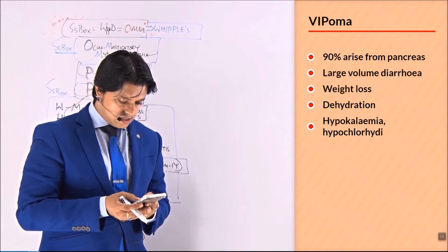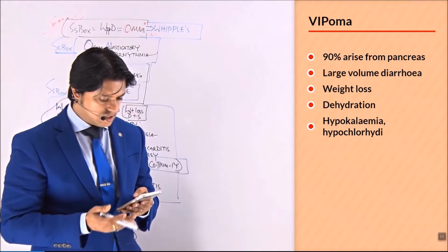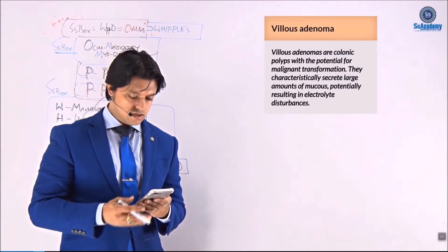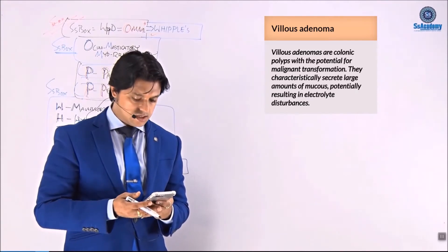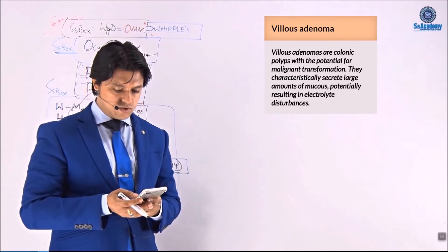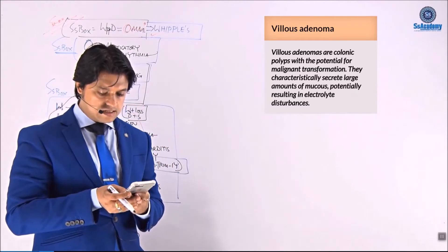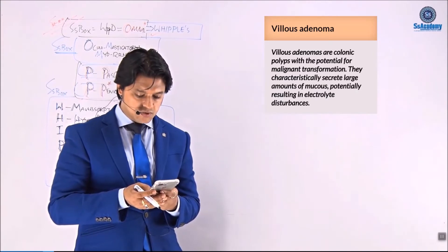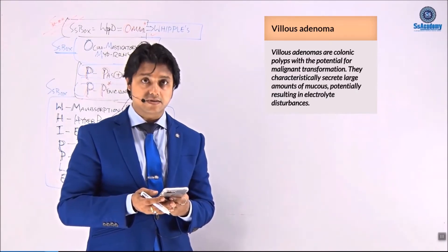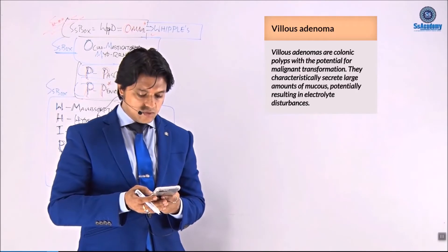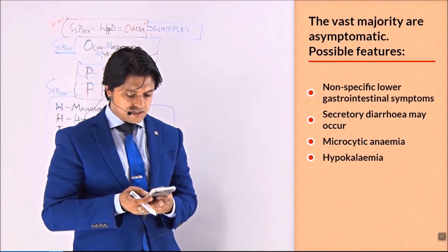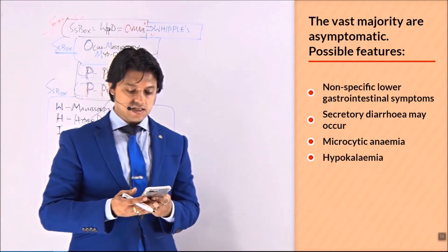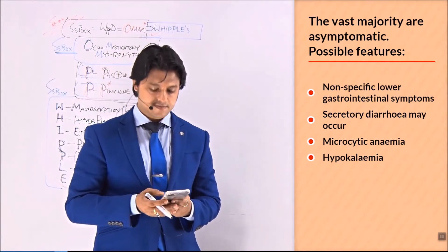Now I'd like to discuss another topic together — villous adenoma. Villous adenoma, also known as adenomatous polyposis or adenomatous polyps, are colonic polyps with the potential for malignant transformation. They are characterized by large amounts of mucus, potentially resulting in electrolyte disturbances. Features include non-specific large GI symptoms, secretory diarrhea, microcytic anemia, and hypokalemia.